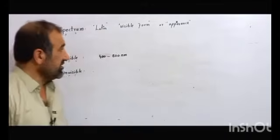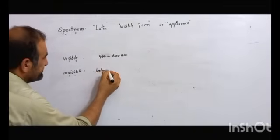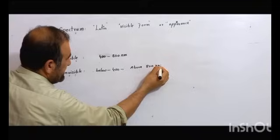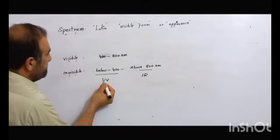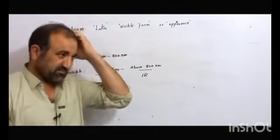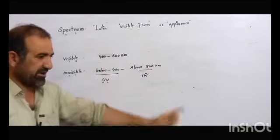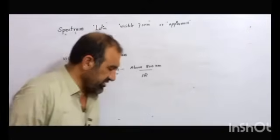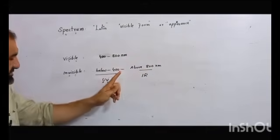When the wavelength comes below 400, that is the ultraviolet region, and above 800 is the infrared region. Ultra means before violet, and infrared means after red. The ultraviolet light and the infrared light are invisible to our eyes.